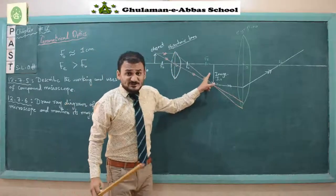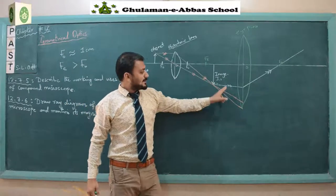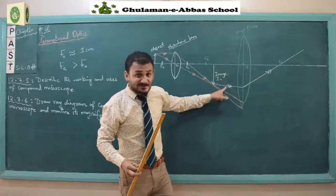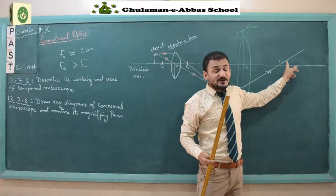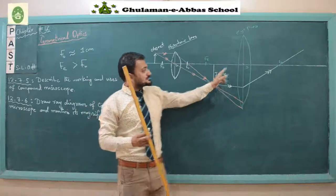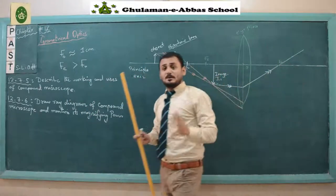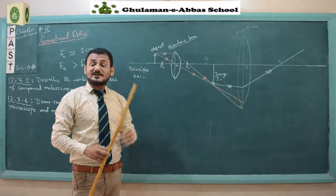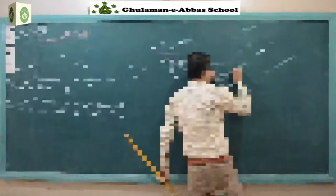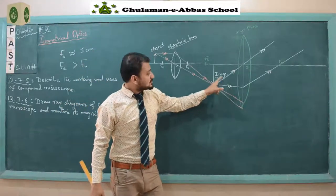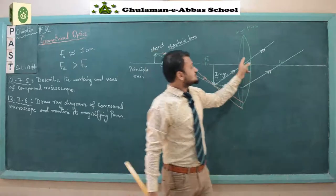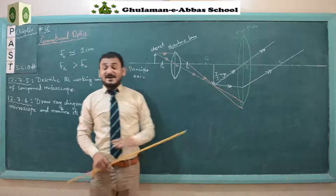I have treated this image as a virtual object and applied the first rule — the incident ray is parallel to the principal axis, and after passing through the lens it passes through the principal focus. Now we apply the second rule: if the incident ray strikes the optical center, it passes straight through the lens without bending. So the ray from the object going to the optical center passes straight through the eye piece lens.